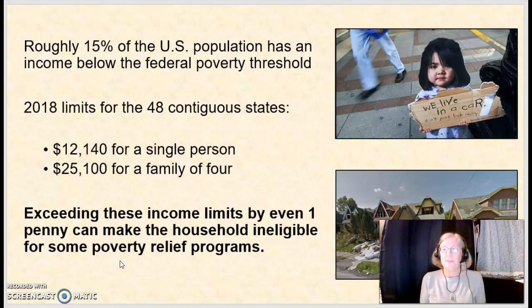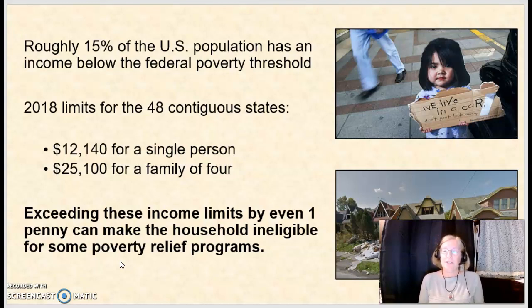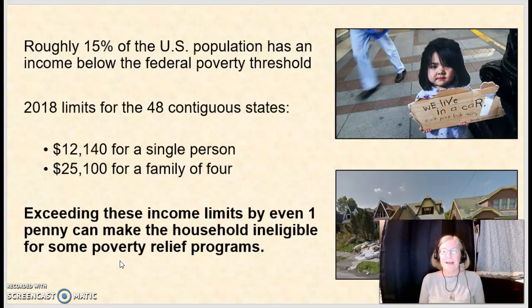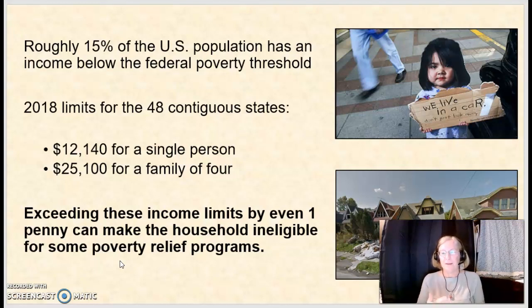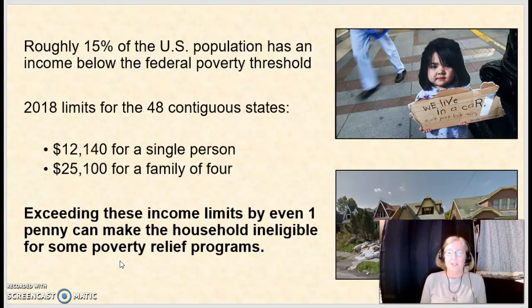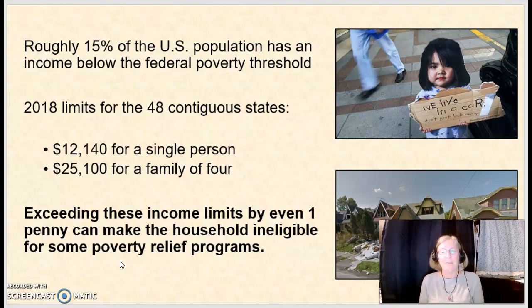About 15% of the US population has an income below the federal poverty threshold. In 2018, the limits for the 48 contiguous states were $12,140 for a single person and $25,100 for a family of four. If a household exceeds those income limits by even one penny, it can become ineligible for some poverty relief programs such as food assistance or cash assistance for families with dependent children.